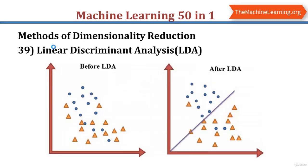Linear discriminant analysis is a dimensionality reduction technique commonly used for supervised classification problems. It is used for modeling differences in groups — separating two or more classes — by projecting features from higher-dimensional spaces into a lower-dimensional space. Using only a single feature to classify classes may result in some overlapping, so we increase the number of features for proper classification. LDA uses both x-axis and y-axis to create a new axis and project data onto it, maximizing the separation of two categories and reducing 2D graphs to 1D. The two criteria used by LDA are: maximize the distance between means of the two classes, and minimize the variation within each class.